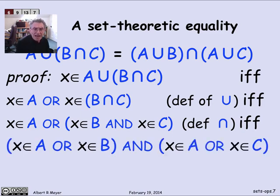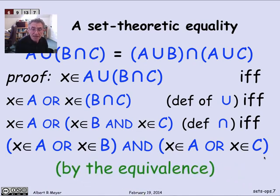And now I have a propositional formula involving or and and and the basic assertions about sets of x is a member of one of those A, Bs, and Cs. Now at this point, I can immediately apply my propositional equivalence and say that the assertion x is in A or x is in B and x is in C holds if and only if this expression x is in A or x is in B and x is in A or x is in C. Why is that? Well, I'm just invoking the propositional equivalence. Let's look at it.